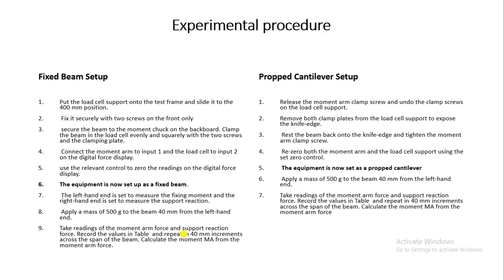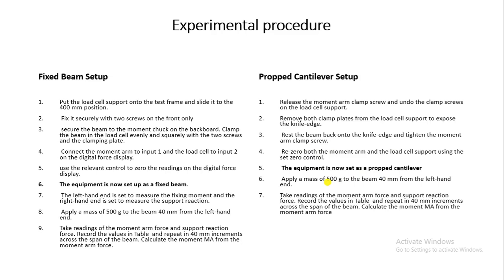The left-hand end measures the fixing moment and the right-hand end measures the support reaction. Apply a mass of 500 grams to the beam 40 mm from the left-hand end; take readings of moment arm force and support reaction force, record in the table, and repeat in 40 mm increments. For the probe cantilever setup, release the moment clamp screw, undo the clamp screw on the load cell, and remove both clamp plates from the load cell support to expose the knife edge.